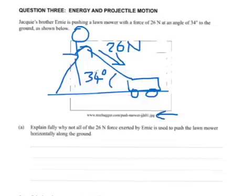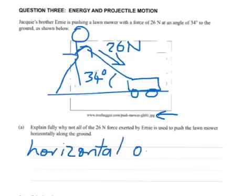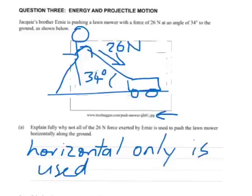There's a web address if you do want to go check it out. Explain fully why not all of the 26 newton force exerted by Ernie is used to push the mower horizontally along the ground. Well, the number one reason is that he's applying the force on an angle. There is a horizontal component and a vertical component. The horizontal component only is used to push the mower.